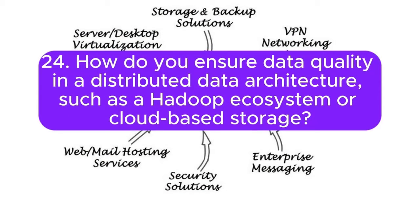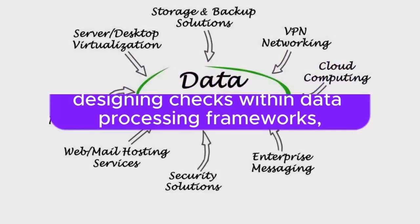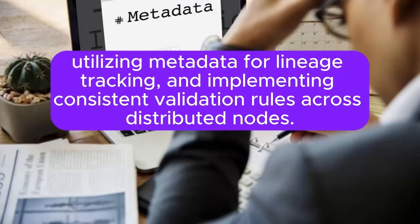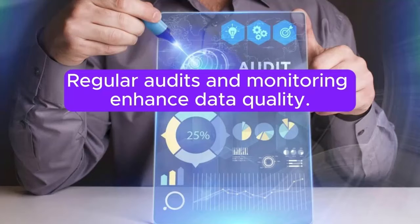24. How do you ensure data quality in a distributed data architecture such as a Hadoop ecosystem or cloud-based storage? Answer: Ensuring data quality in distributed architectures involves designing checks within data processing frameworks, utilizing metadata for lineage tracking, and implementing consistent validation rules across distributed nodes. Regular audits and monitoring enhance data quality.